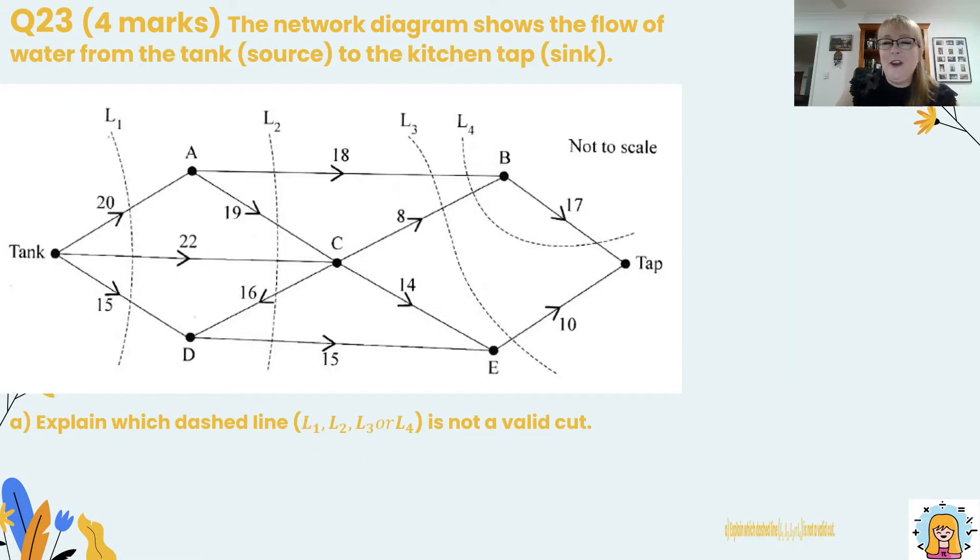Okay our next question on the paper for short answer questions on decision mathematics is a minimum flow maximum cut question. So the network diagram shows the flow of water from the tank over here on the left. It's usually drawn on the left and that's our source all the way to the kitchen tap which is our sink. So you need to think about source and sink. Usually we draw the source on the left and the sink on the right but not always. So just be aware of that.